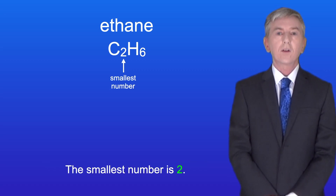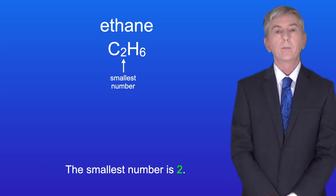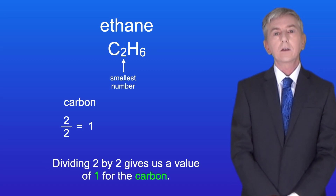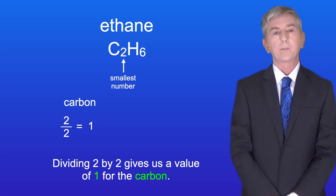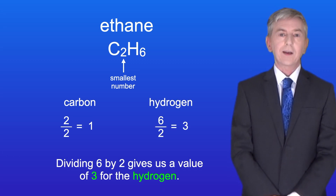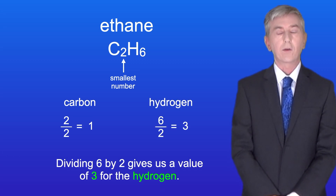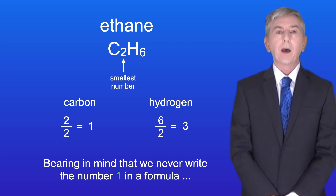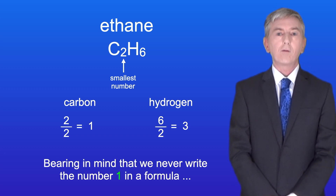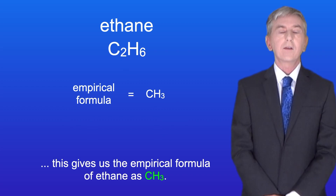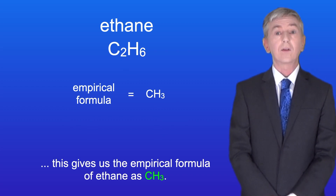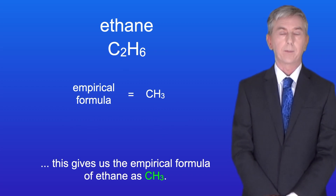The smallest number is 2. Dividing 2 by 2 gives us a value of 1 for the carbon. Dividing 6 by 2 gives us a value of 3 for the hydrogen. Bearing in mind that we never write the number 1 in a formula, this gives us the empirical formula of ethane as CH3.